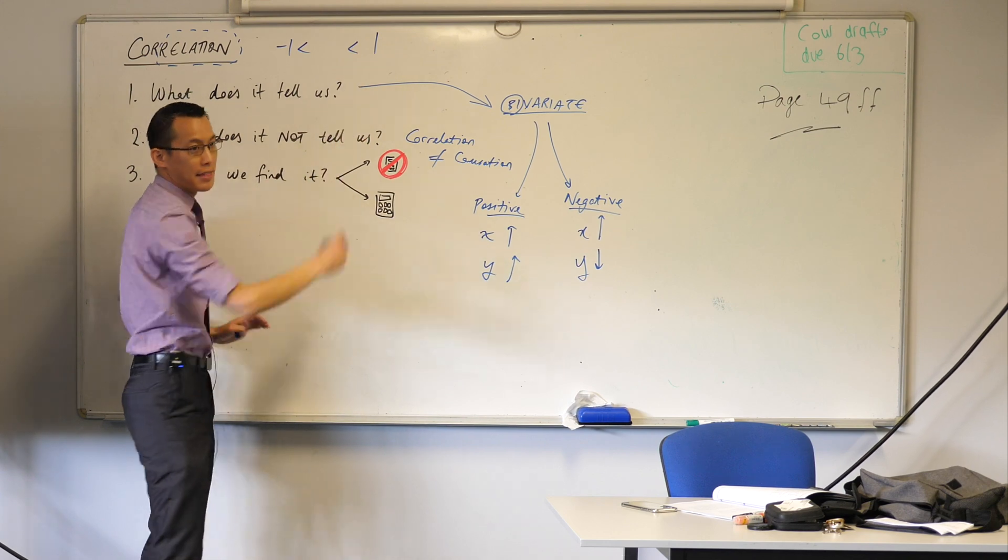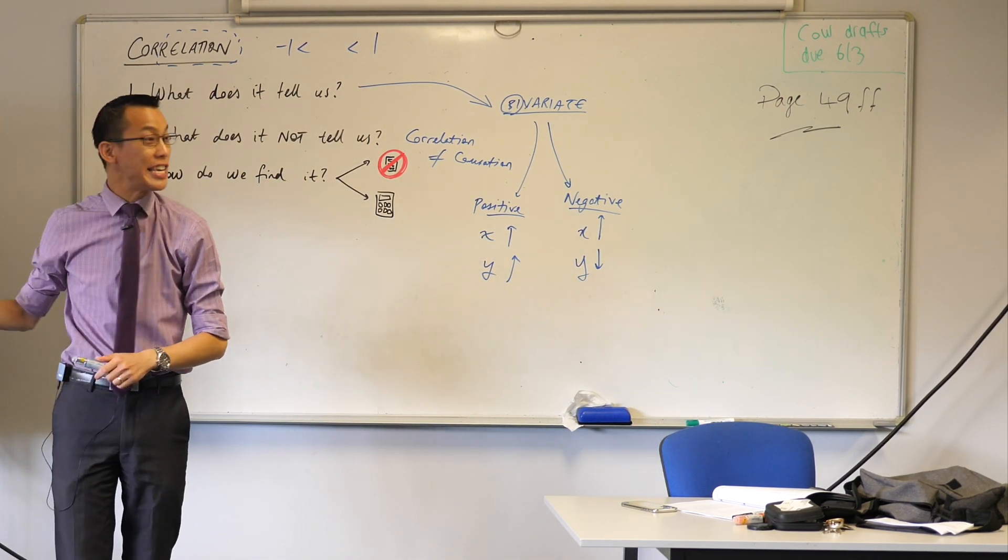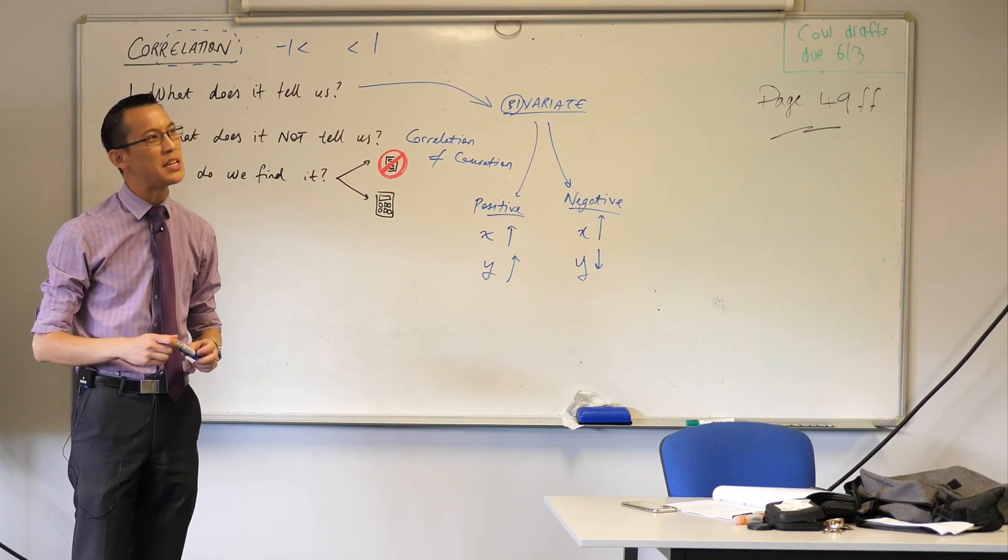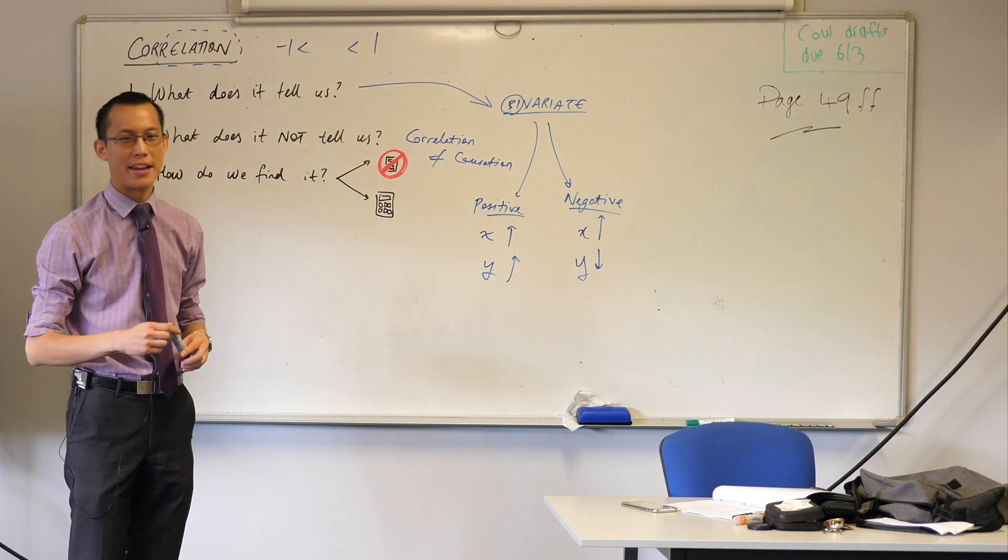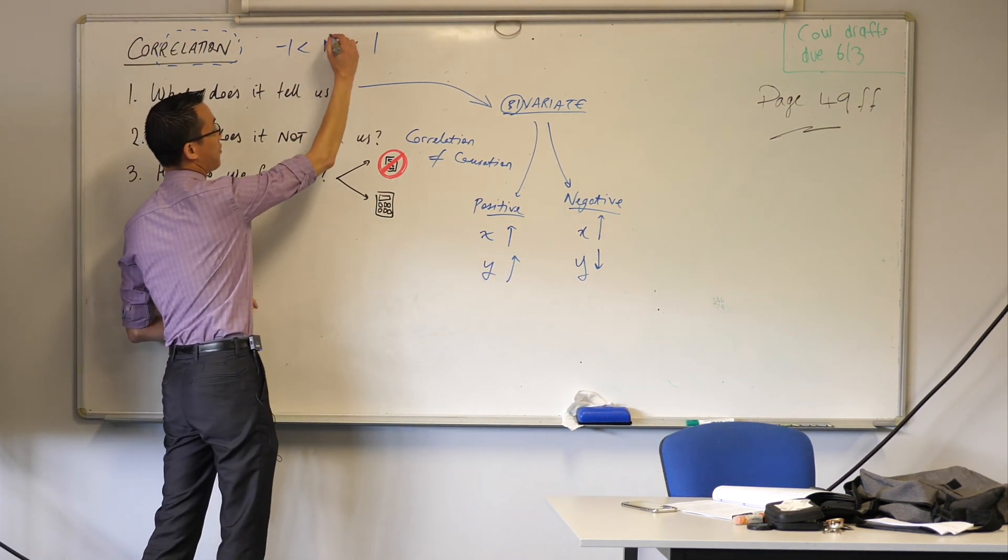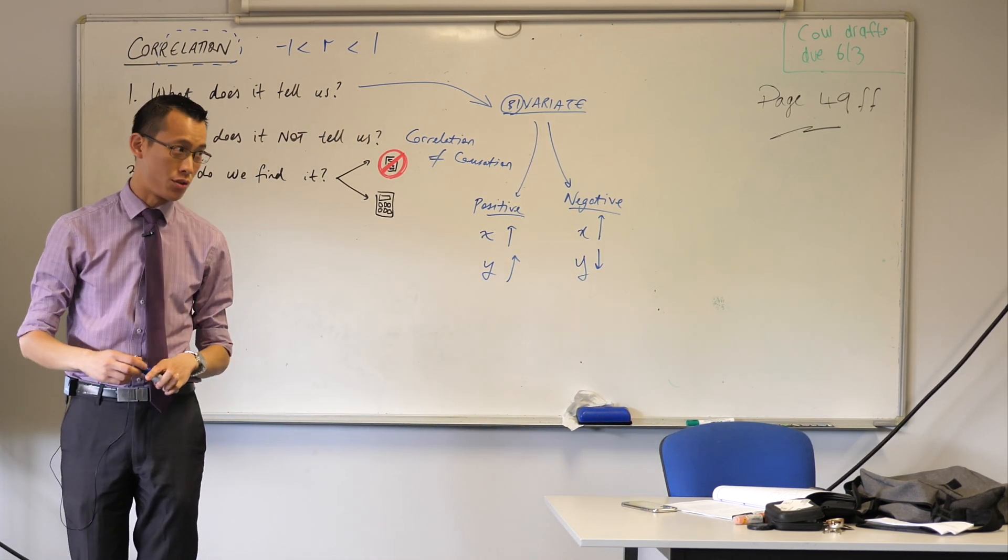Now, you might think that a natural letter to use for correlation would be something like C, except it turns out C's been taken, like there's the speed of light and like y-intercepts and all that kind of thing. So you don't get C at all. For the purposes of this lesson, we're going to use the letter R. We'll drill it down into a little more later on about why we choose that letter.